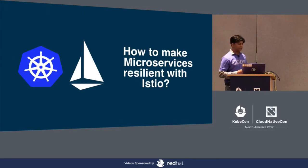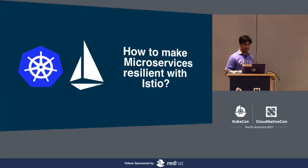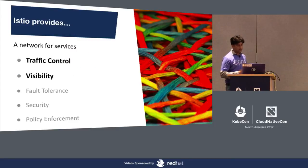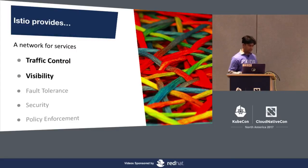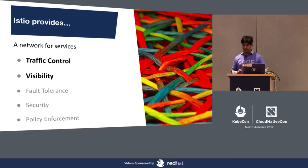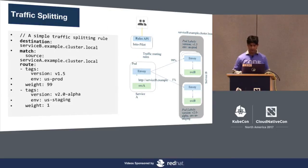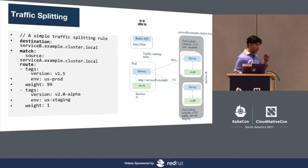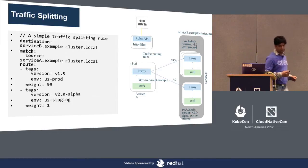So how do we make microservices resilient with Istio? Let's look at the capabilities Istio provides. The two main areas are traffic control and visibility.